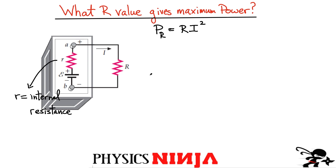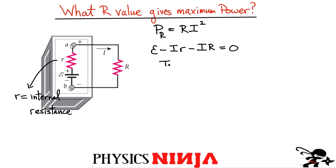So let's eliminate the current. This is easy for this circuit since we only have two resistors. Applying Kirchhoff's loop rule starting at point B: EMF minus the voltage drop across the internal resistance minus the voltage drop across the load resistance equals zero. The current flowing in the circuit is therefore I = EMF / (r + R).